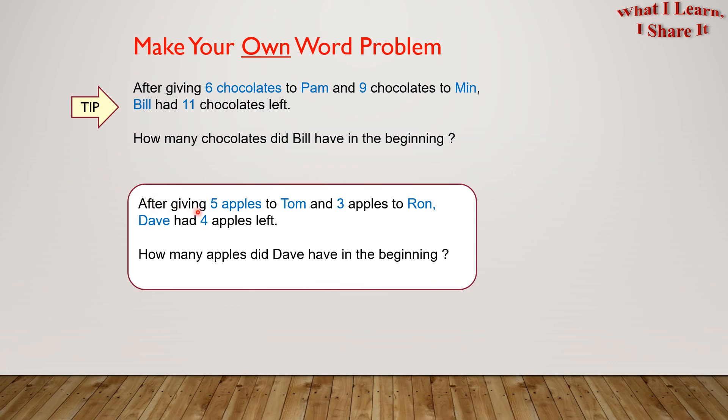After giving 5 apples to Tom and 3 apples to Ron, Dave had 4 apples left. How many apples did Dave have in the beginning? It's so easy to make your own word problems, right?